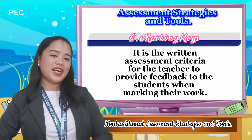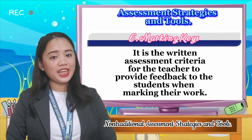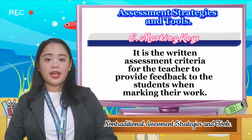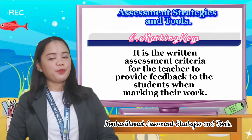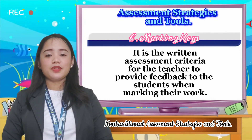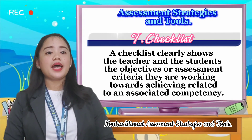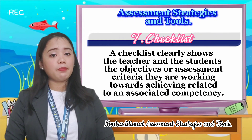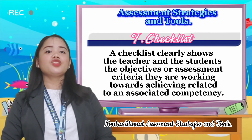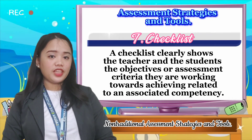Next is the marking rubric or marking case — this is the written assessment criteria given by the teacher on how they will grade their students based on their performance. Lastly, the checklist is a guide for students to achieve the criteria of the activity given by their teacher. Clearly, this checklist shows the teacher and students how to achieve the objective of the given assessment.